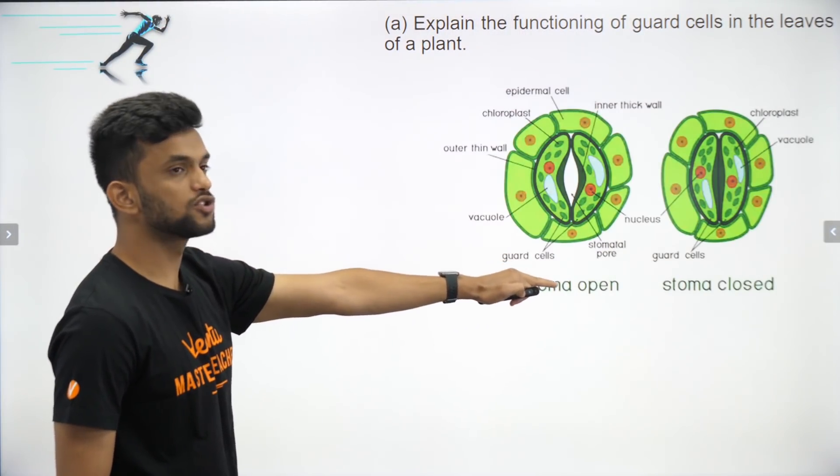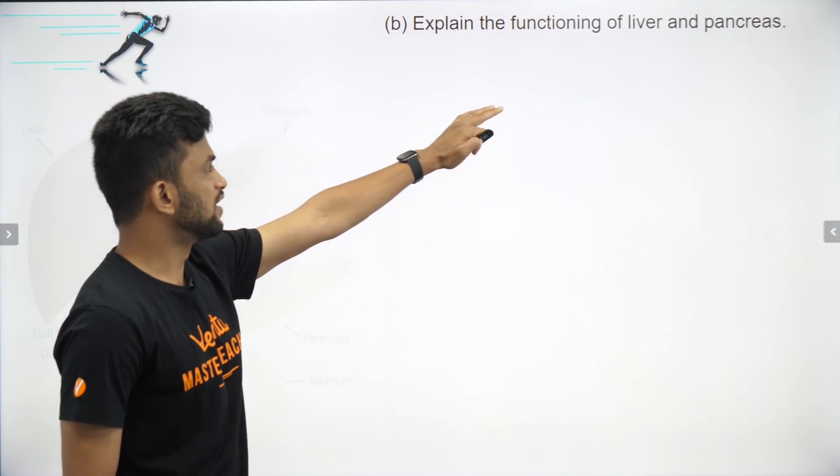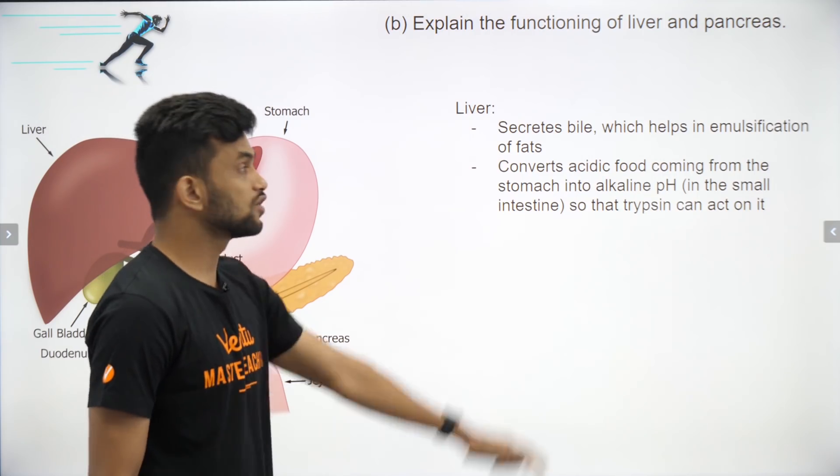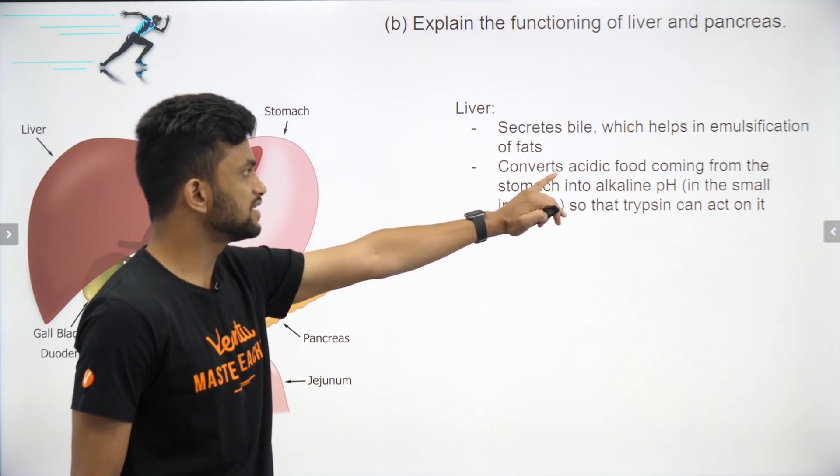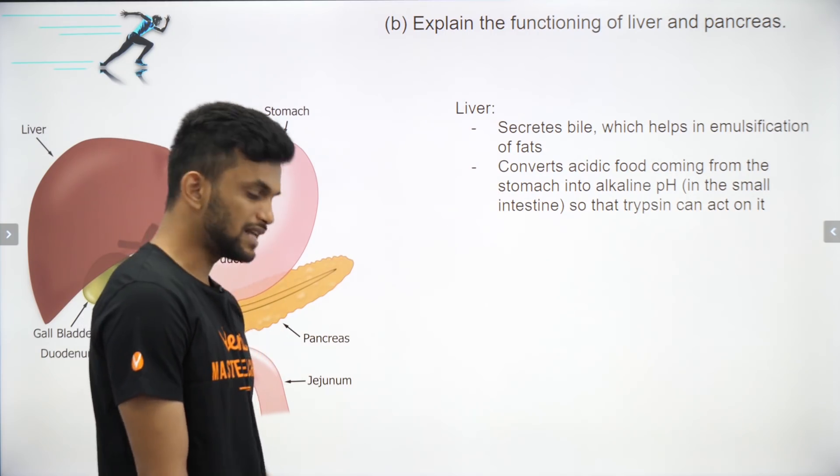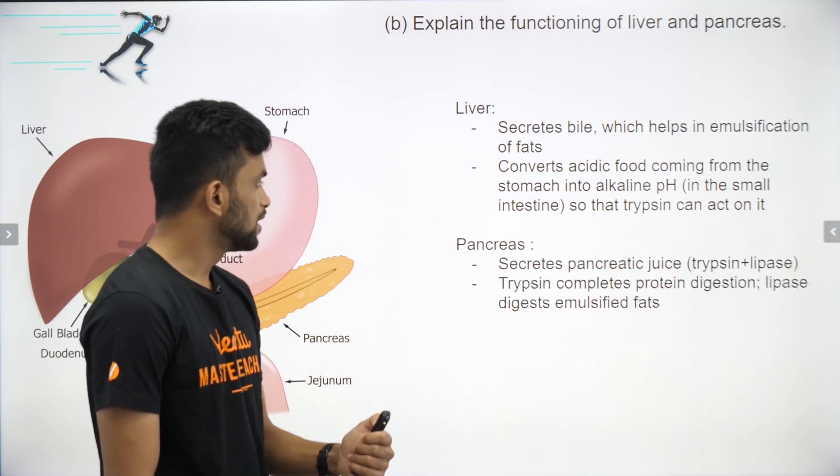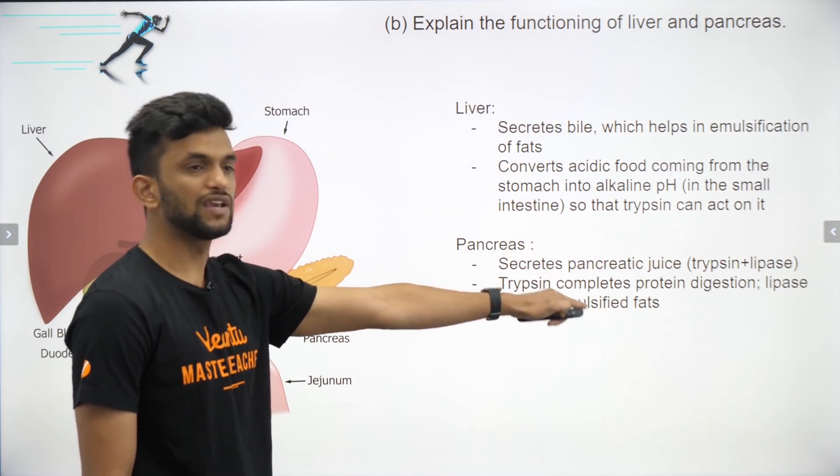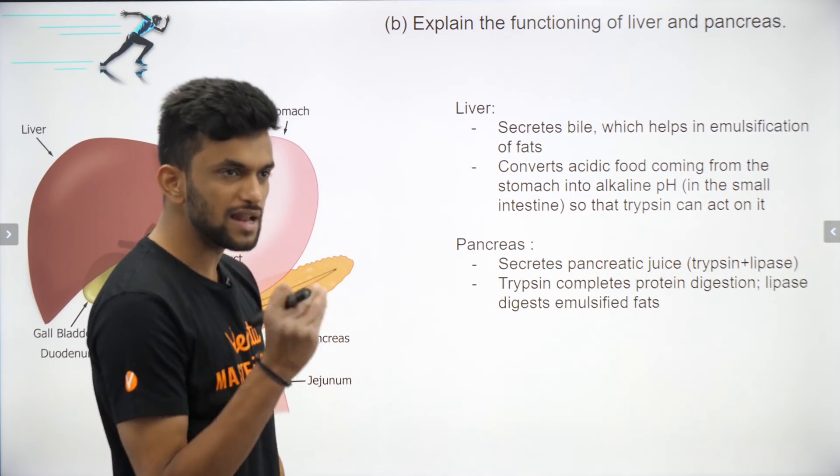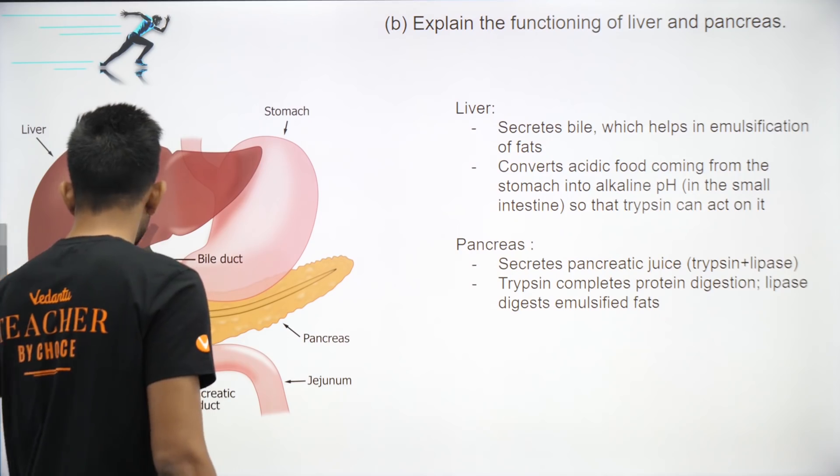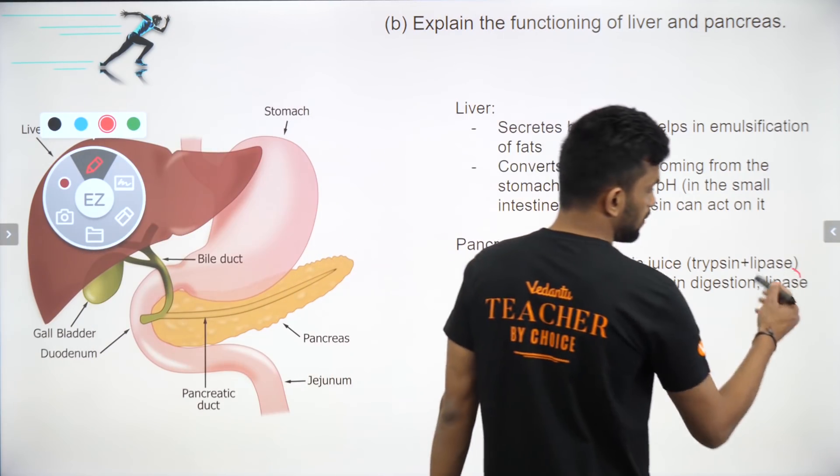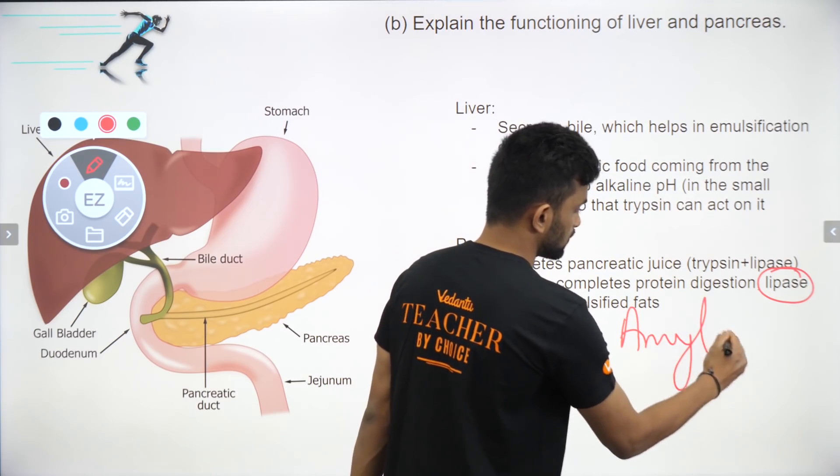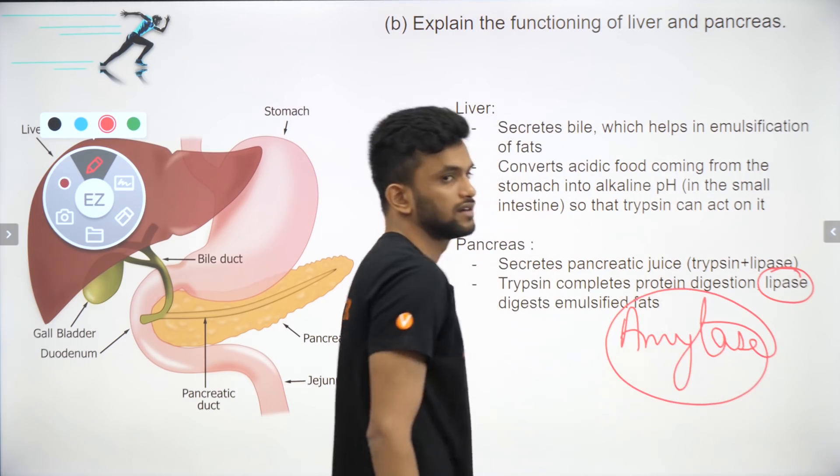In inhalation, the volume of the lung increases. In exhalation, the volume of the lung decreases. Stomata open and close with guard cells. Functioning of liver and pancreas: liver helps in emulsification by secreting bile which converts acidic food from stomach into alkaline. Pancreatic juice has trypsin for protein digestion, lipase for fat digestion. I have told you a secret trick: wherever you see lipase, it means fat digesting. If you see amylase, it means carbohydrate digesting.